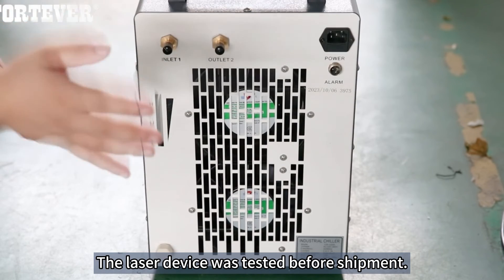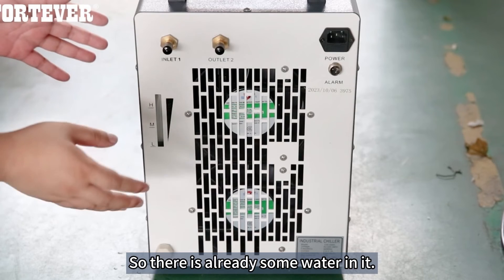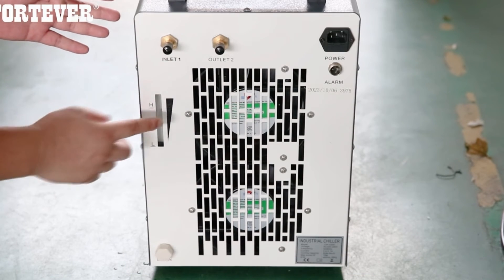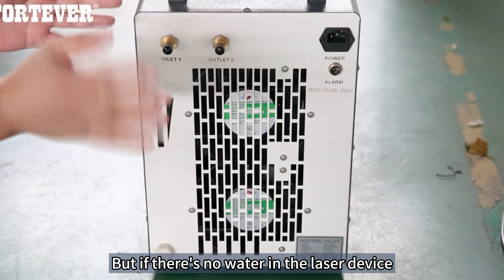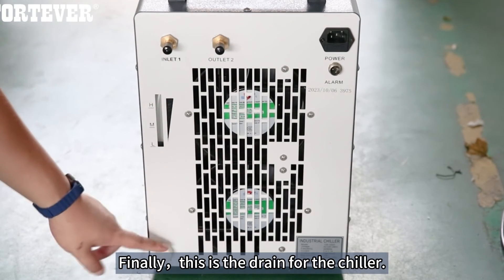The laser device was tested before shipment, so there is already some water in it. It's okay to add water to M. But if there's no water in the laser device, need to add water to H. Finally this is the drain for the chiller.